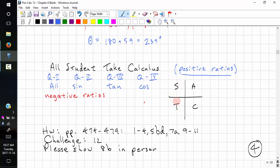Only tangent is positive in quadrant 3. Only cosine is positive in quadrant 4. If you want to know the negative ratios, it's just the ones that aren't included. There's no negative ratios in quadrant 1. Cosine and tangent are negative in quadrant 2. Sine and cosine are negative in quadrant 3. Sine and tangent are negative in quadrant 4.